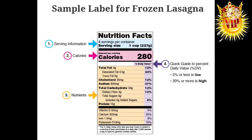Friends, we have four categories for nutrition facts. First, serving information. Second, calories. Third, nutrients. Fourth, percentage of daily value. So let's look at the details.